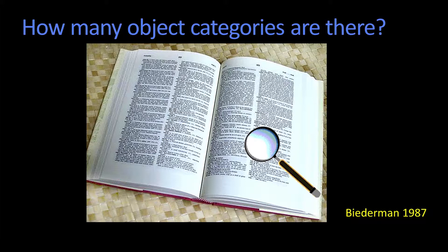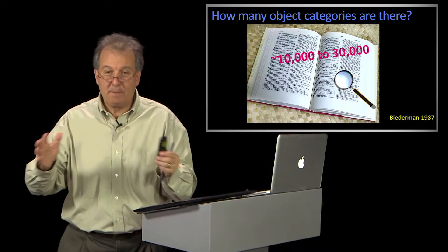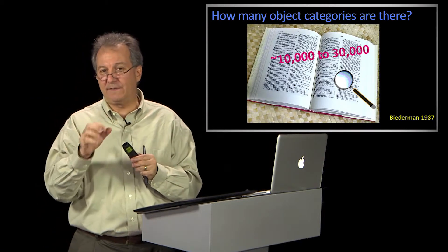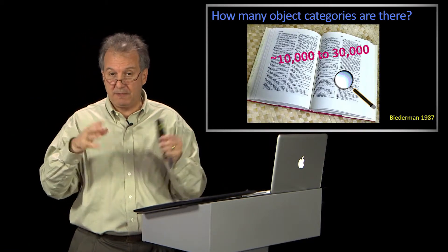So Irv Biederman, a psychologist who does work in cognitive vision and mental models for doing vision, back in the 80s, he came up with this number of about 10 to 30,000. Now, big range, but it's an interesting idea because it's also related if you take a look at the number of nouns people know.